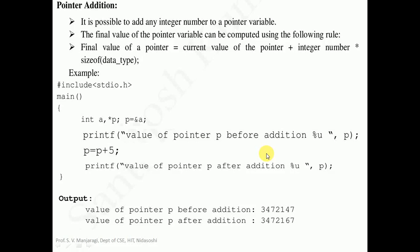The next operation we use on a pointer is addition, called pointer addition. It is possible to add an integer number to a pointer variable. The final value of the pointer can be computed with the formula: final value of pointer is equal to current value of the pointer plus integer number multiplied by size of the data type. Now let us take a program to demonstrate pointer addition.